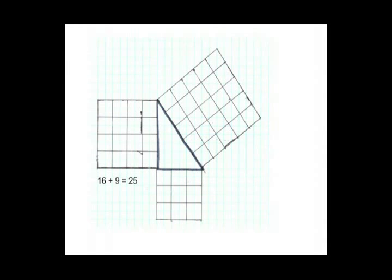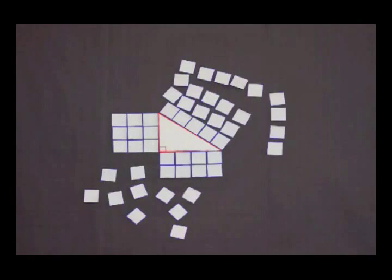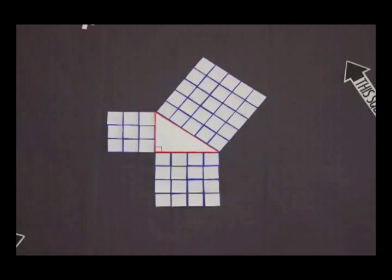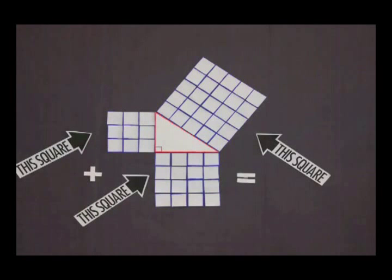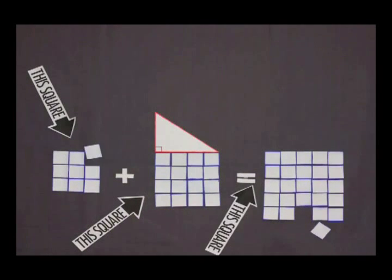Now that we know that a squared equals 16 and b squared equals 9, we can add them together and find that in this example, c squared is equal to 25 square units. We can take the square root of 25 and find that side c, also known as the hypotenuse, is equal to 5.